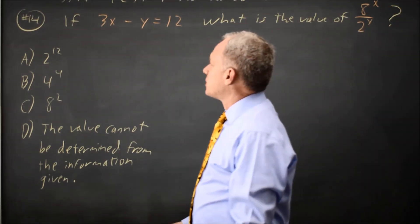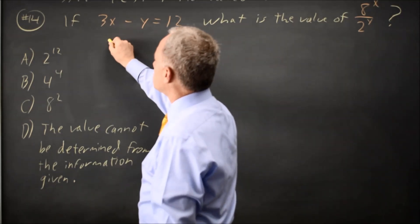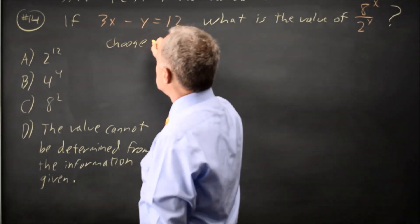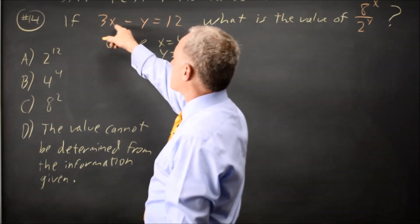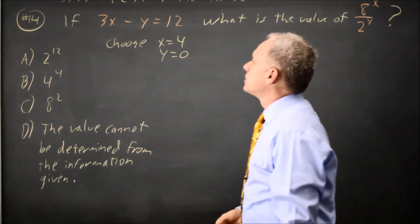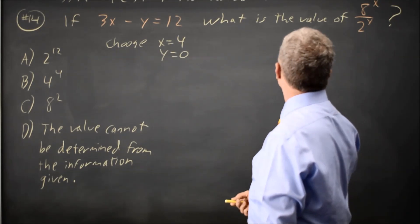One of the easiest ways to do many problems like this is to make up some numbers. So I'm going to choose x equals 4 because then y equals 0, and 3 times 4 minus 0 is 12, so that does work for their equation.